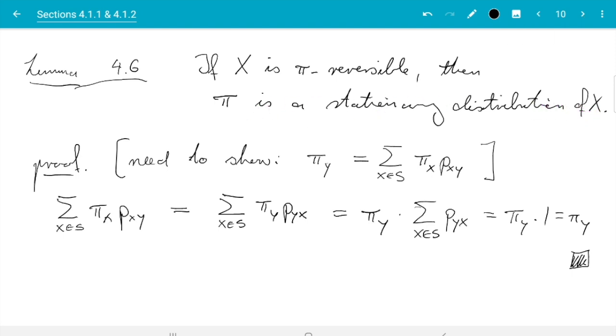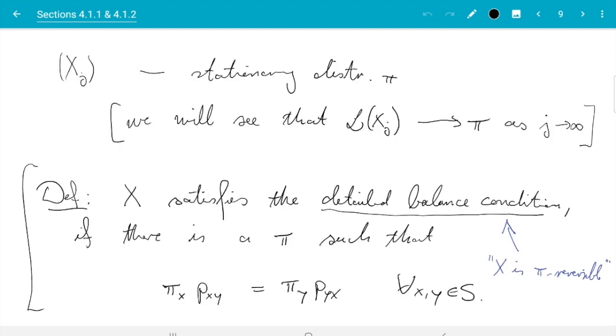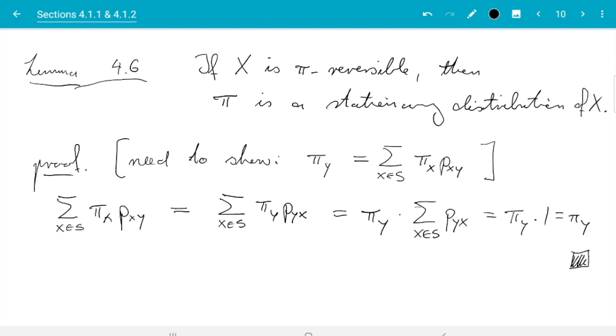So now we are in a position to tackle the statement I promised. Namely, I promised that the Markov chain constructed by the Metropolis-Hastings algorithm will have stationary distribution pi. And here we saw being pi reversible is even stronger. Namely, it implies that pi is a stationary distribution. And here we will show the slightly stronger statement just because it's just as easy. And we will show that the output of the Metropolis-Hastings algorithm is pi reversible. That implies what we need.